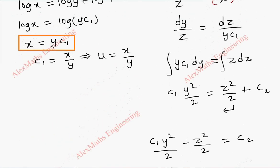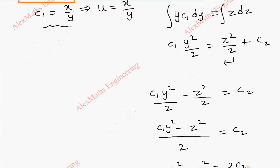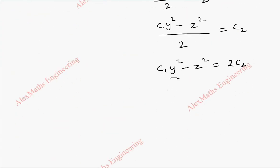Now, replacing c1 from here, c1 is x by y, so we replace here. That is, x by y into y square minus z square is equal to 2c2. After canceling this, we get xy minus z square and we are going to take this as v.